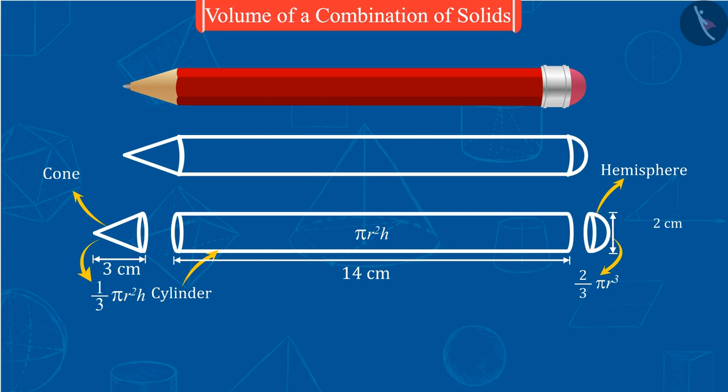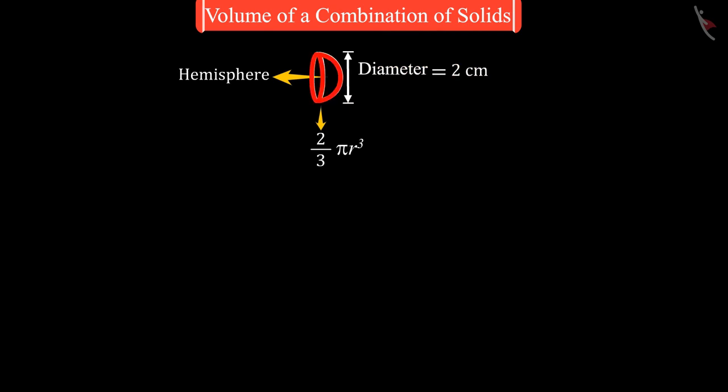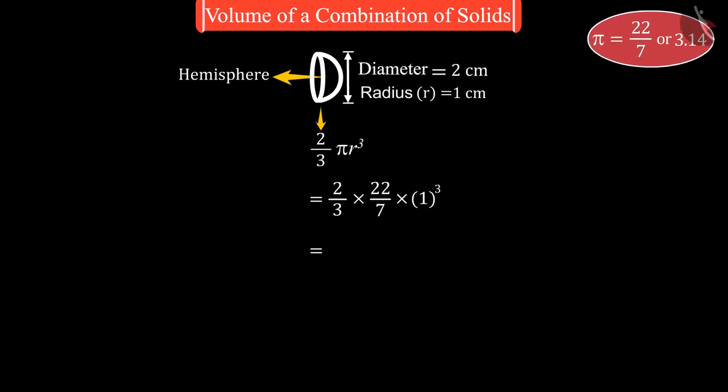Can you see that the diameter of this hemisphere is two centimeters? Then what would be its radius? Correct, the radius of this hemisphere would be one centimeter. Also we know that the value of pi is equal to 22 upon 7 or 3.14. On substituting the values of r and pi and solving, we get volume of hemisphere is equal to 44 upon 21 cubic centimeters.